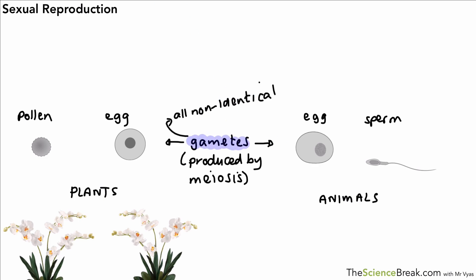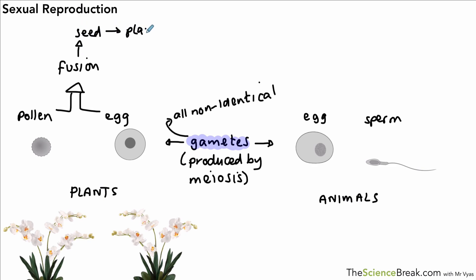Because gametes are non-identical, sexual reproduction can produce offspring with variety. Pollen grains and egg cells can join together — that's called fusion, or sometimes fertilization — and this eventually leads to the production of a seed, which goes on to produce a new plant under the right conditions.